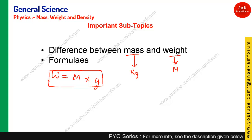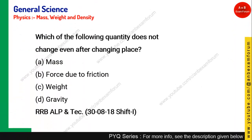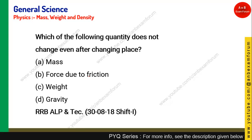First question: which of the following quantities does not change even after changing place? As I just told you, mass is the amount of matter an object contains and it does not change from one place to another. Weight, gravity, and force due to friction can vary. So for this question, option A — mass — is the correct answer.